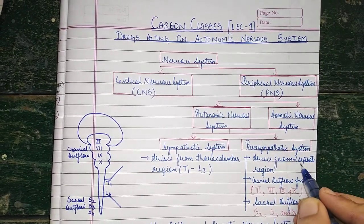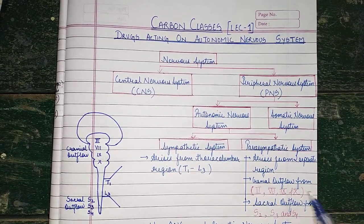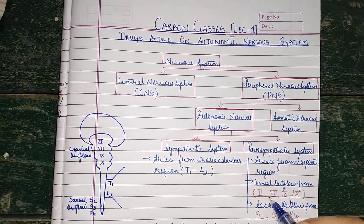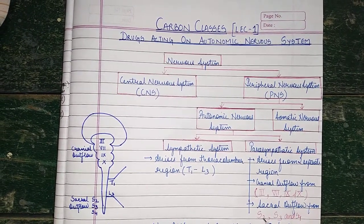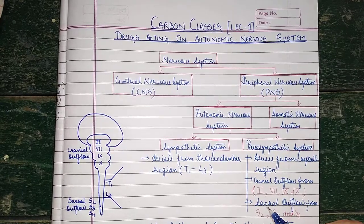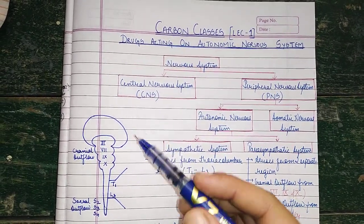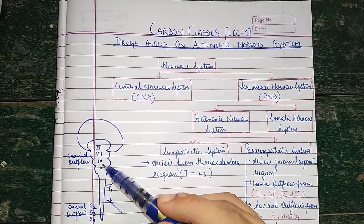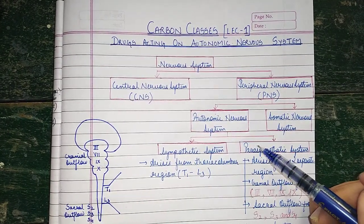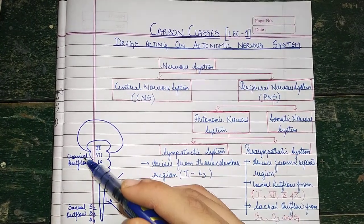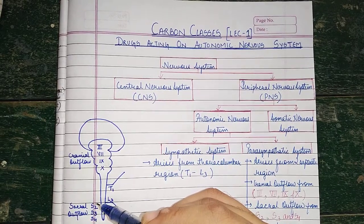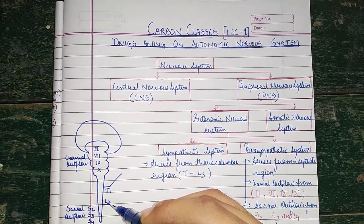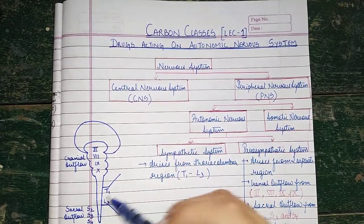The parasympathetic system arises from two separate regions. First is the cranial outflow, which comes from the 3rd, 7th, 9th, and 10th cranial nerves. Second is the sacral outflow, which comes from S2, S3, and S4. Here is a basic diagram summarizing all these things — cranial outflow from the 3rd, 7th, 9th, and 10th cranial nerves, and sacral outflow from S2, S3, and S4. The sympathetic system arises from T1 to L3.